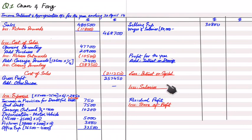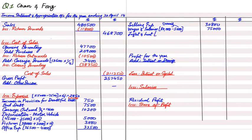Since Fong is a partner, his salary is not an expense in the income statement — it belongs in the appropriation account. We deduct the 5,000 from wages and salaries and record it in the drawings and appropriation account. Heat and light is accrued by 750, which we add to the expense and include as a current liability.